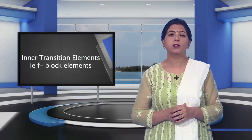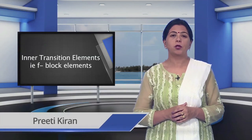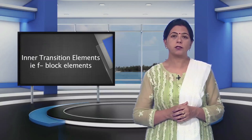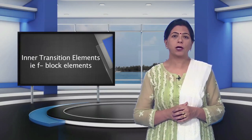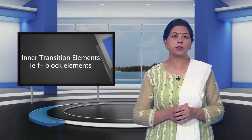Dear students, in the previous session, you have studied about the transition metals with respect to magnetic properties, catalytic properties, coloured ions, interstitial compounds, alloys, metal oxides, metal oxo anions and the two important compounds, potassium dichromate and potassium permanganate.